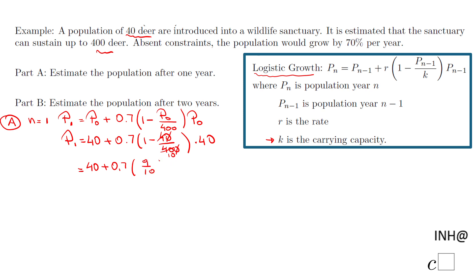Again if you want to use this fraction as an approach, times 40. Again you can simplify, and we have 40 plus 0.7, and then we have 9 times 4, that is 36.